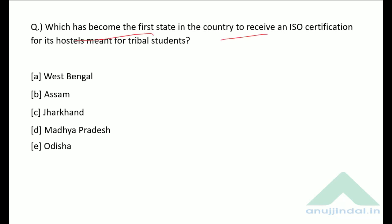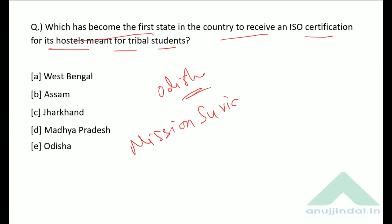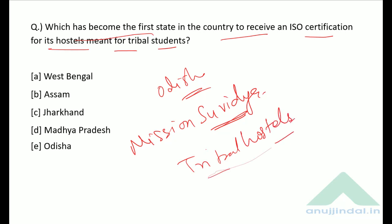Which has become the first state in the country to receive ISO certification for its hostels meant for tribal students? The Government of Odisha launched Mission Su-Vidya to provide uniform standards of infrastructure and amenities to all tribal hostels. Therefore, the correct answer is option E — Odisha.